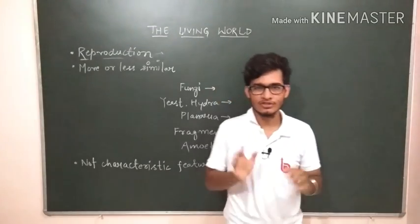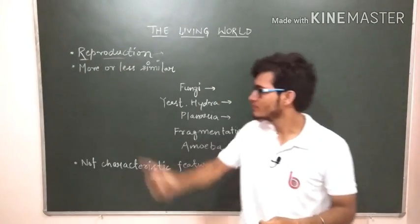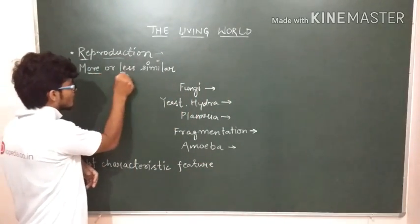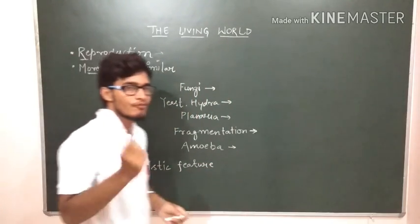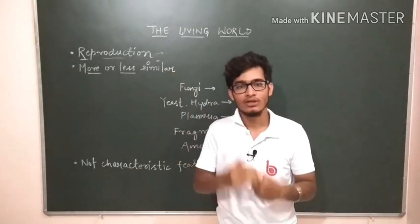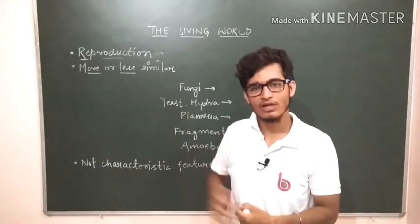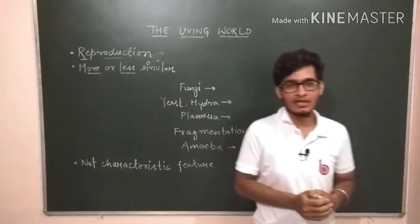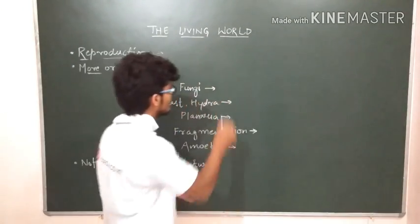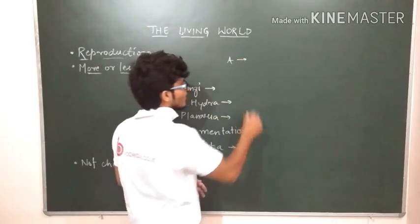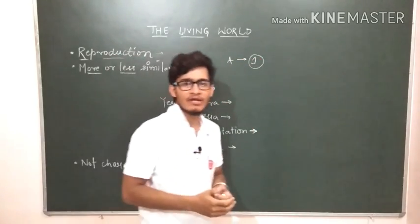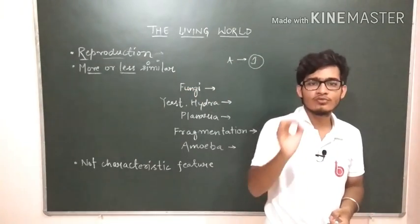This process is producing some sort of progeny or the next generation which can be more or less similar to the parents. Why more or less similar? If the parent is reproducing with the help of asexual reproduction, only one parent is involved, there is no fusion of gametes.